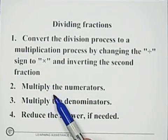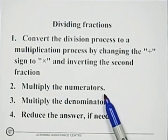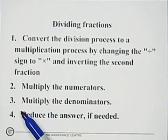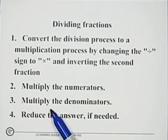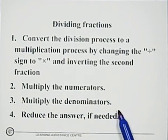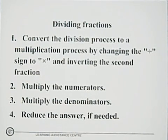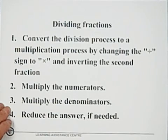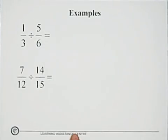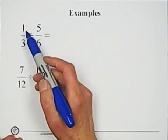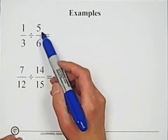Second, multiply the numerators. Third, multiply the denominators, and reduce the answer if needed. Example: one third divided by five over six.